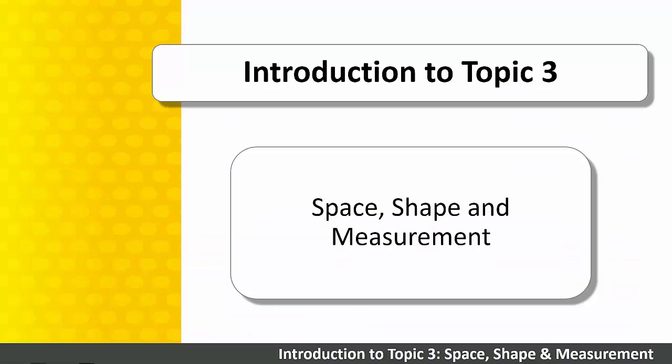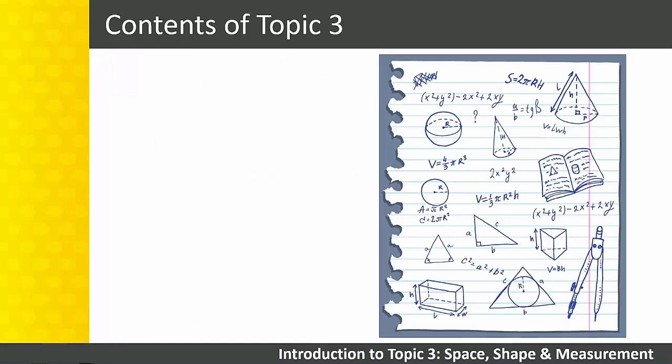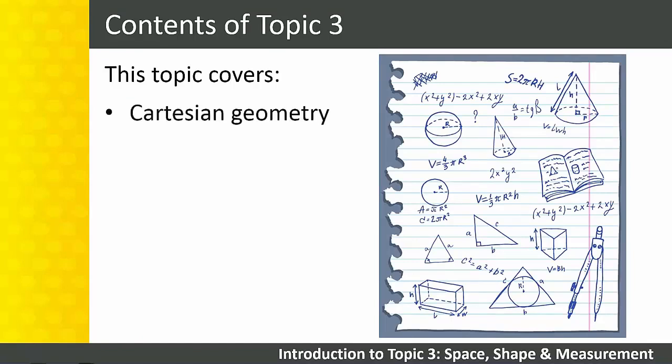Introduction to Topic 3: Space, Shape and Measurement. In this module, we are starting on Topic 3, Space, Shape and Measurement. At Level 4, this means Cartesian Geometry, Geometry and Trigonometry. We are going to spend the next six modules, or two days, working through these three subject outcomes of Topic 3.